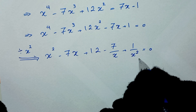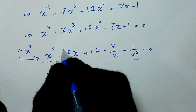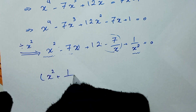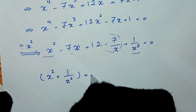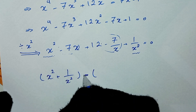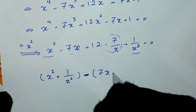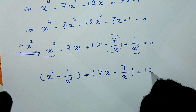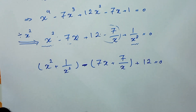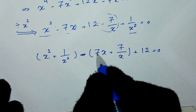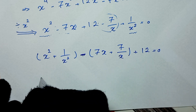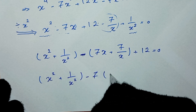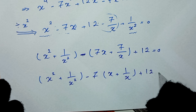We group these terms together: x squared plus 1 over x squared, and minus 7 times the quantity x plus 1 over x, plus 12 equals 0. We factor out 7 from the middle two parts.